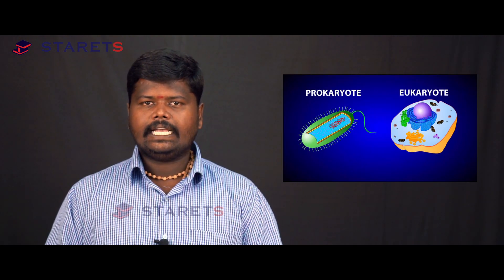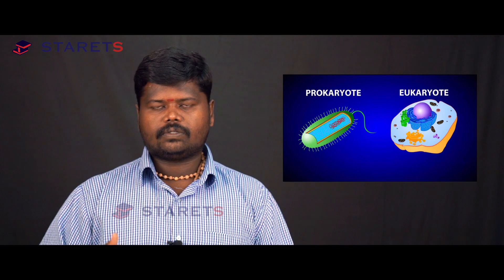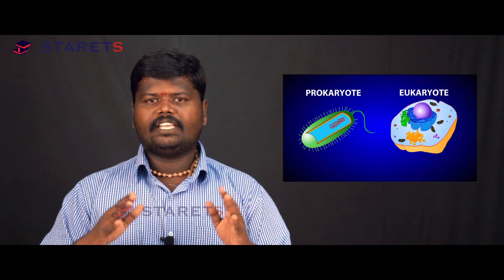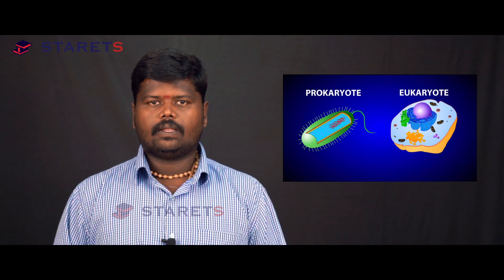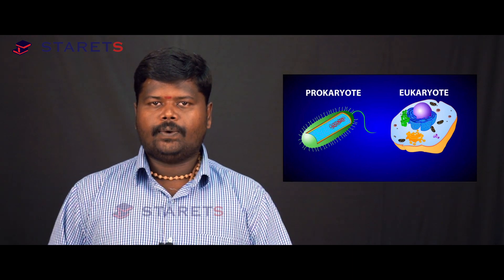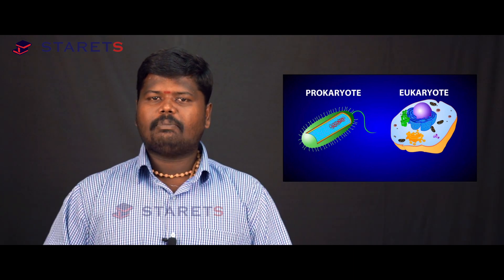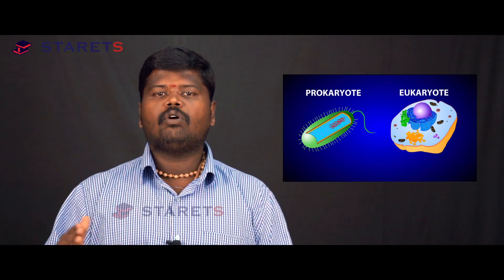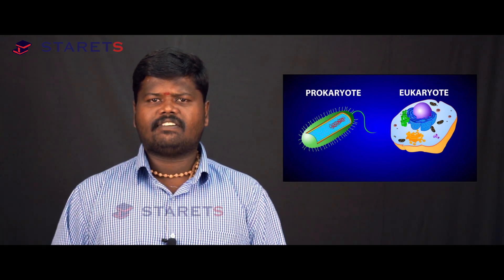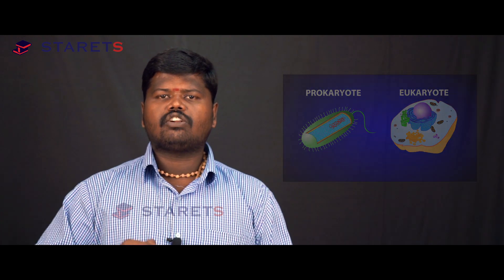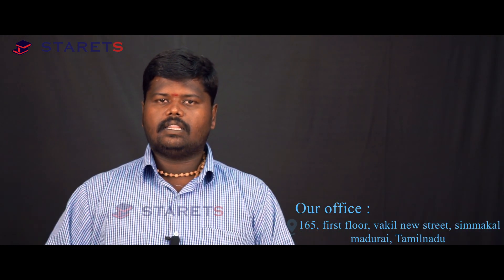As we are discussing the cell, as per NCERT books, cells are divided into two major types: prokaryotic cells and eukaryotic cells. To understand these terms, we use a technique called etymology — the study of the origin of words. Splitting 'prokaryote' gives us 'pro,' meaning primitive, and 'karyon,' meaning nucleus. Similarly, 'eukaryote' gives us 'eu,' meaning true, and 'karyon,' meaning nucleus.